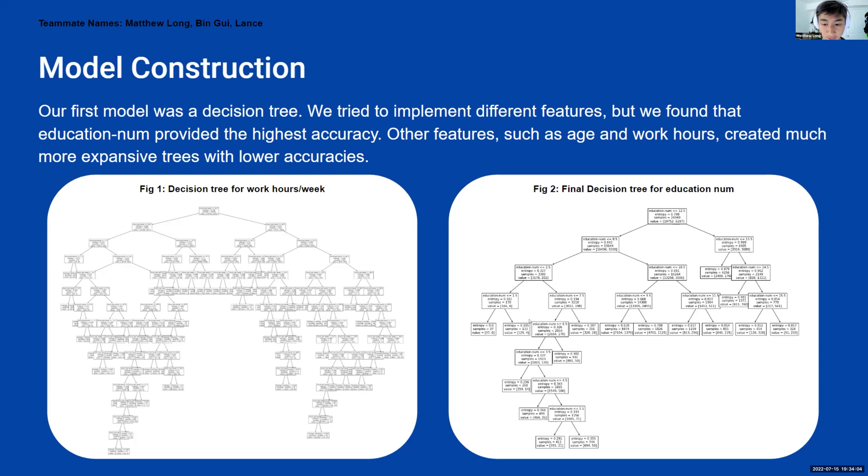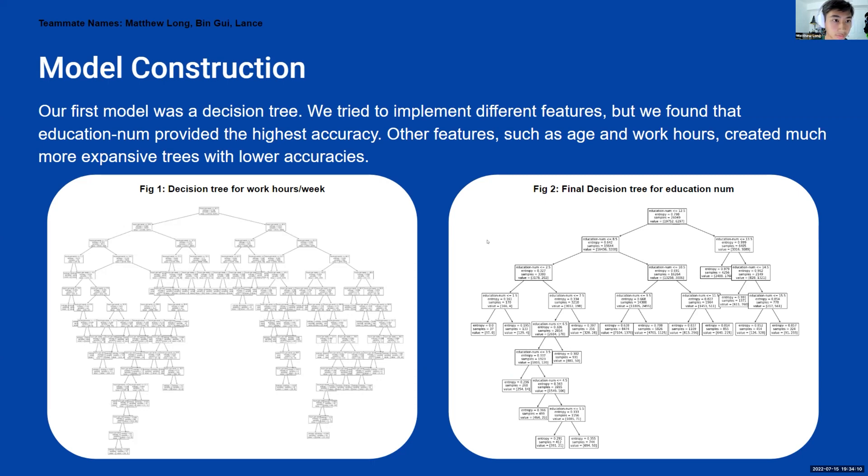As you can see, we used entropy as the measuring, as the smallest value for this model. Our second model was a logistic regression neural network. Similar to a decision tree, we used the same features, the education number, work hours per week, and age. Since this model was a neural network, we also tried out different layers. So on the right over here, this is the basic format of our neural network.